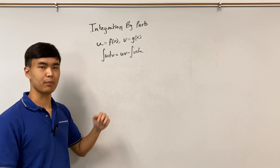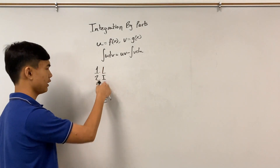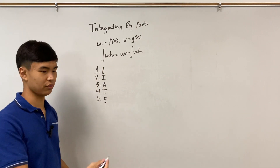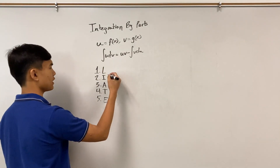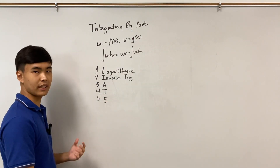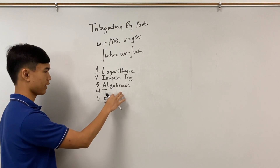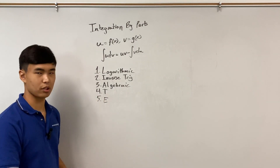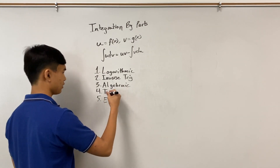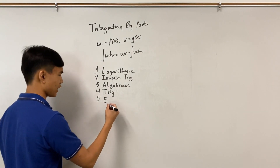There's an acronym to help with that, and it is LIATE. Each letter stands for a different type of function: L is logarithmic, I is inverse trig, A is algebraic — so stuff like polynomials — T is normal trig, and E is exponential.